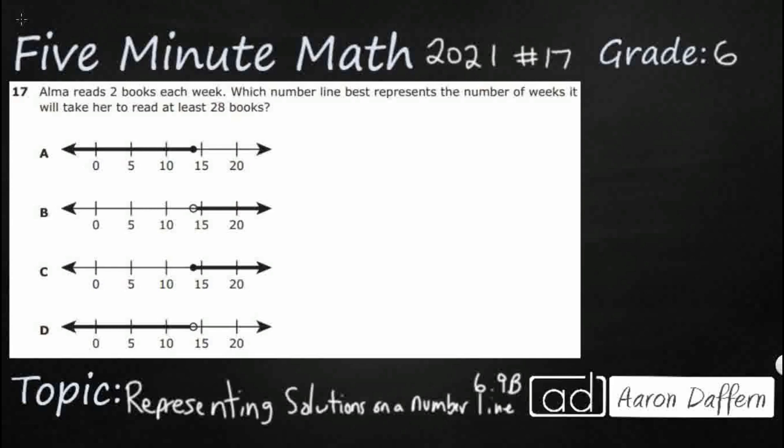So Alma is reading two books each week at a pretty steady rate, and we need a number line that's going to represent the number of weeks it will take her to read at least 28 books. That 'at least' is going to be important — not exactly 28, but at least 28.